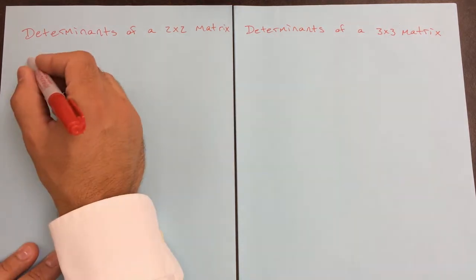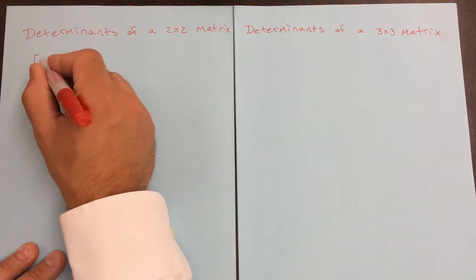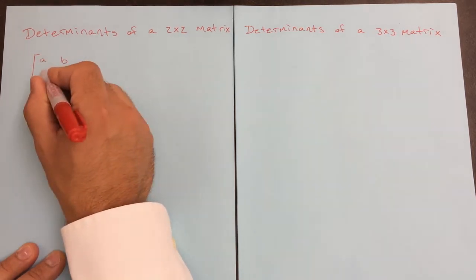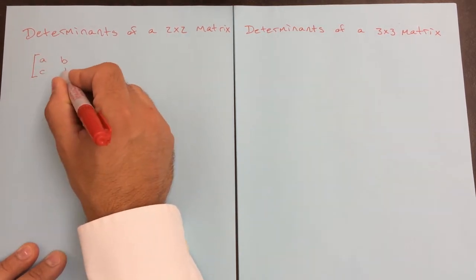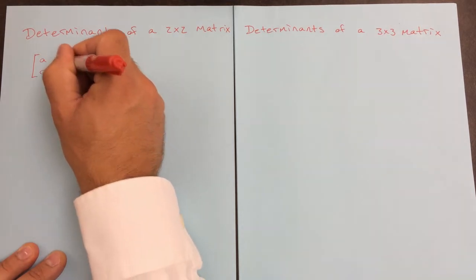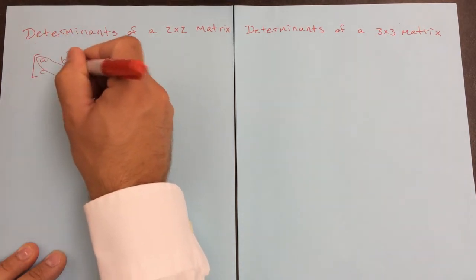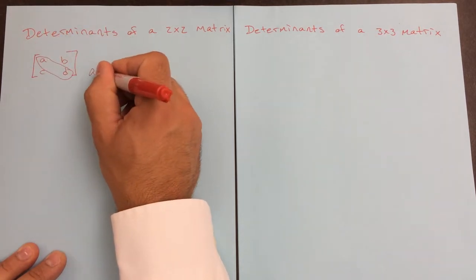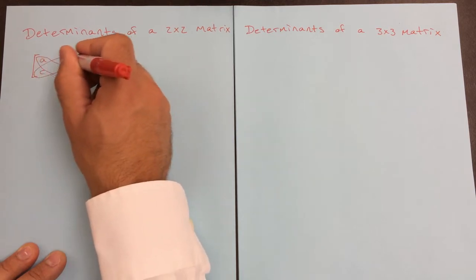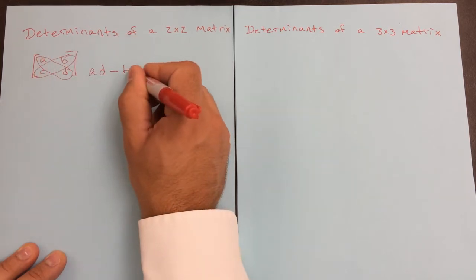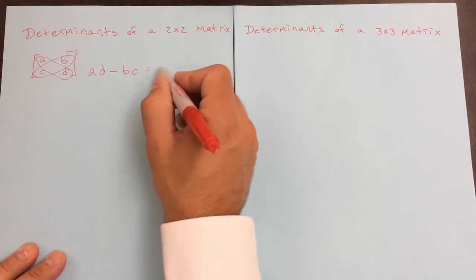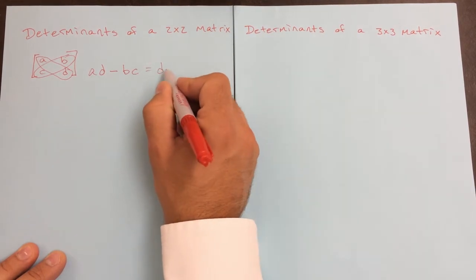On a 2x2 matrix, we're going to pretend that the values are called A, B, C, and D. What you want to do is A times D minus B times C. Whatever that value is, that's your determinant.